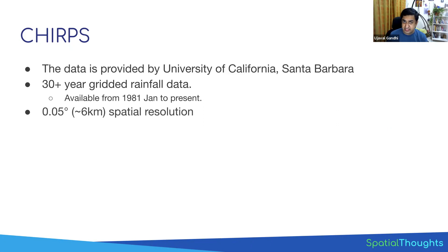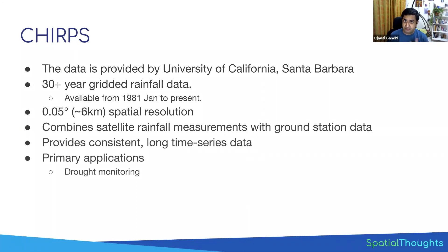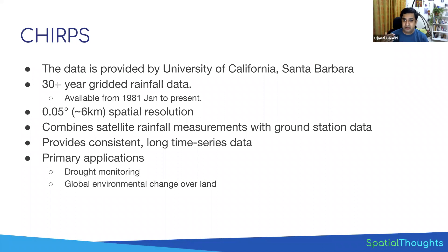It's a fairly high resolution — six kilometers per pixel — much higher than other climate datasets. Because you can combine worldwide station data, you're able to generate this dataset at fairly high resolution. The primary application is drought monitoring, but because you can compare current data with a consistent time series, it's also used for determining climate change — whether climate change is affecting the amount of rainfall. There's a nice paper I'll link at the end of the slides showing the application of this data to determine whether rainfall has been trending down or up.